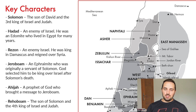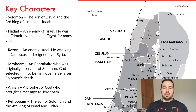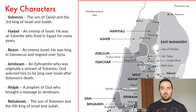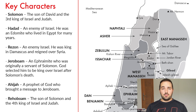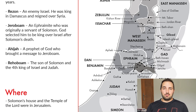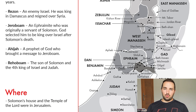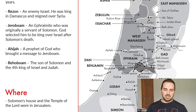And then Ahijah — Ahijah was a prophet of God who brought a message to Jeroboam. And then Rehoboam — Rehoboam was Solomon's son and he was the fourth king over Israel and Judah for a very short period of time; he was primarily just king over Judah. As far as our map, we've already mentioned several foreign nations, but really we're going to be focused on Jerusalem yet again. That's where most of these events are taking place — Solomon's house and the temple of the Lord were in Jerusalem.